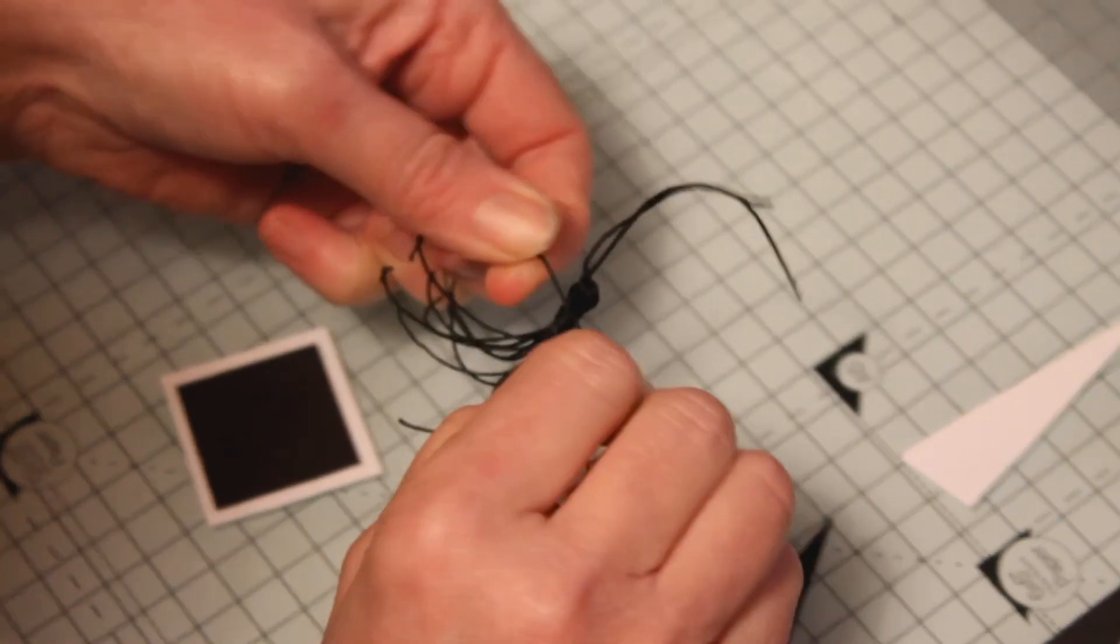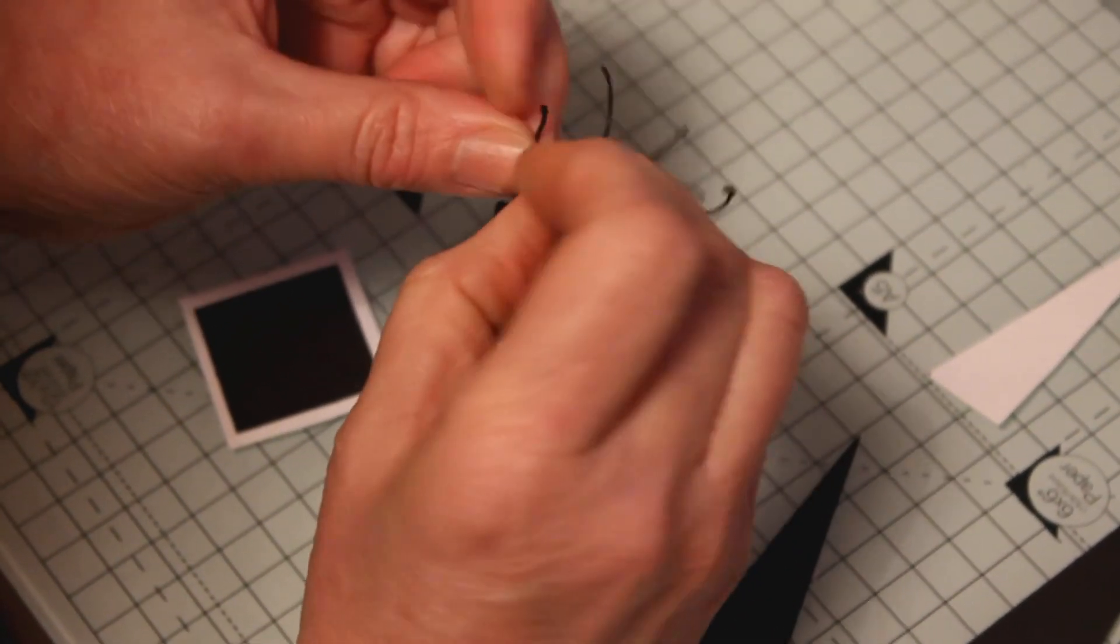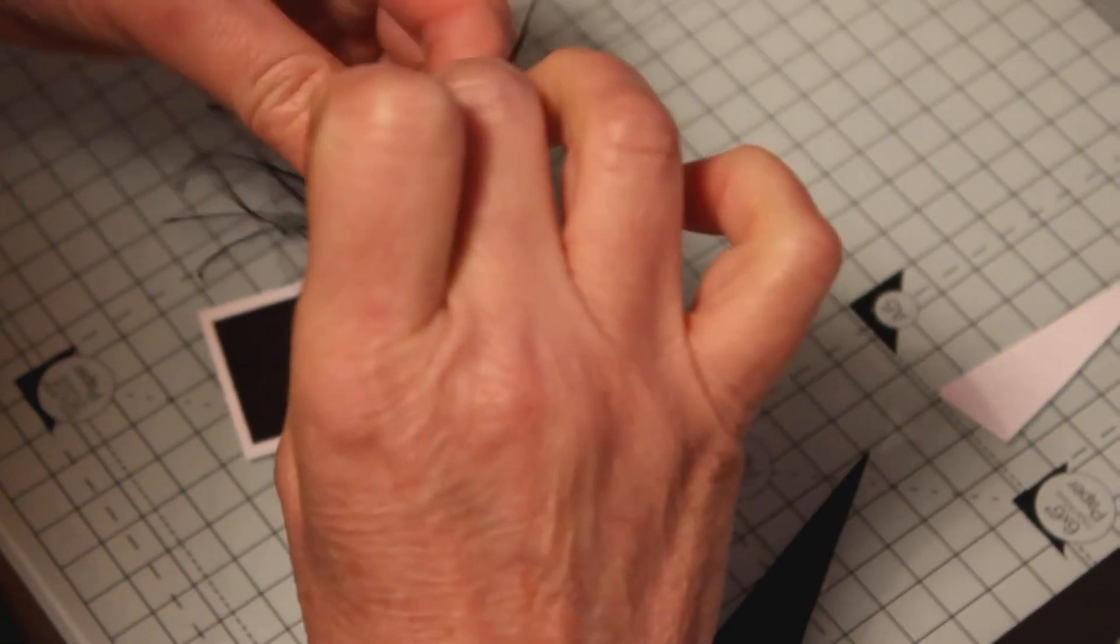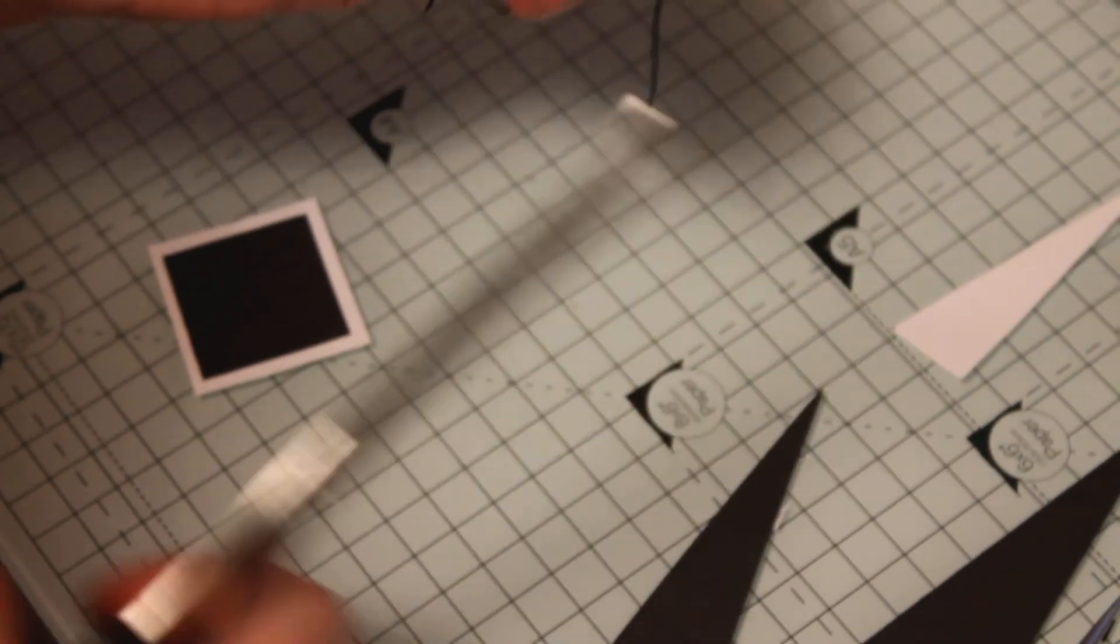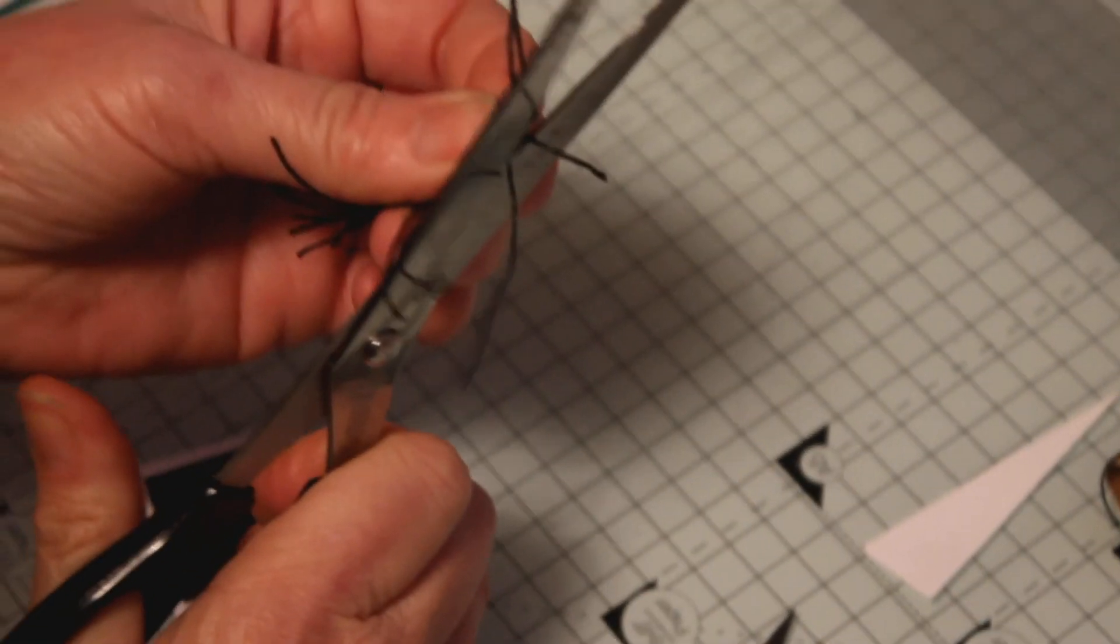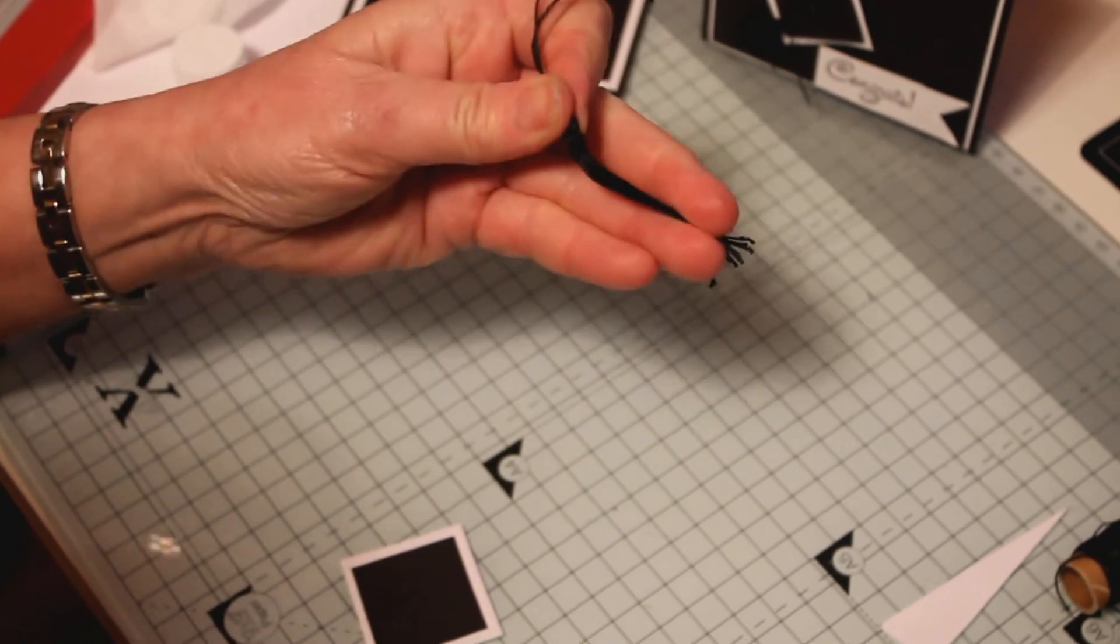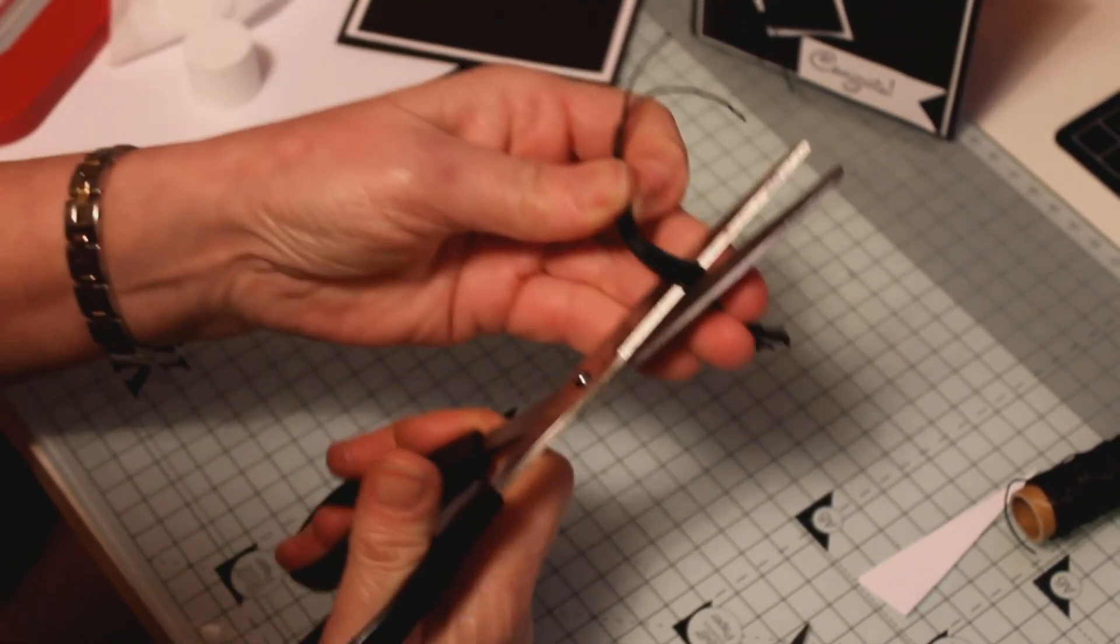So just tie it in a double knot and cut off the ends of it to neaten. As near to the knot as you can. Now that's a bit long I think so I'm simply going to shorten it about there.